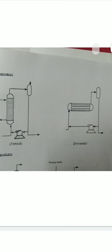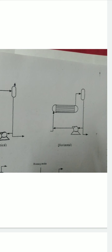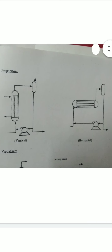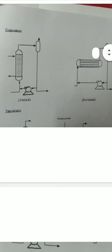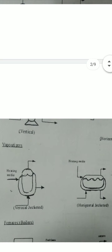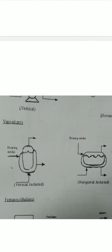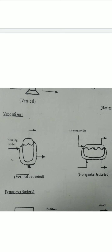Here we have the horizontal evaporator symbol. This shows the collection of gases, horizontal and vertical types. Next is the vaporizer symbol. The vaporizer has two types: vertical jacketed vaporizer and horizontal jacketed vaporizer. The heating media can be seen in the vaporizer symbols.